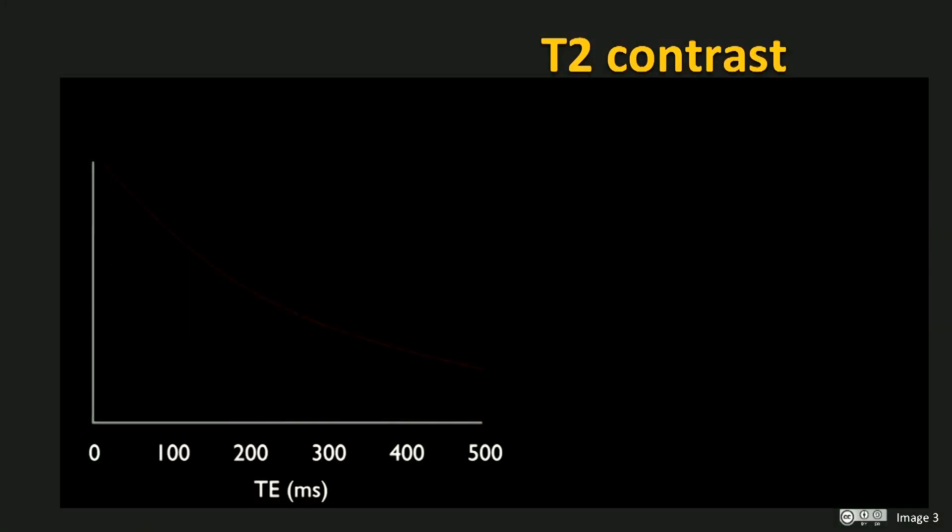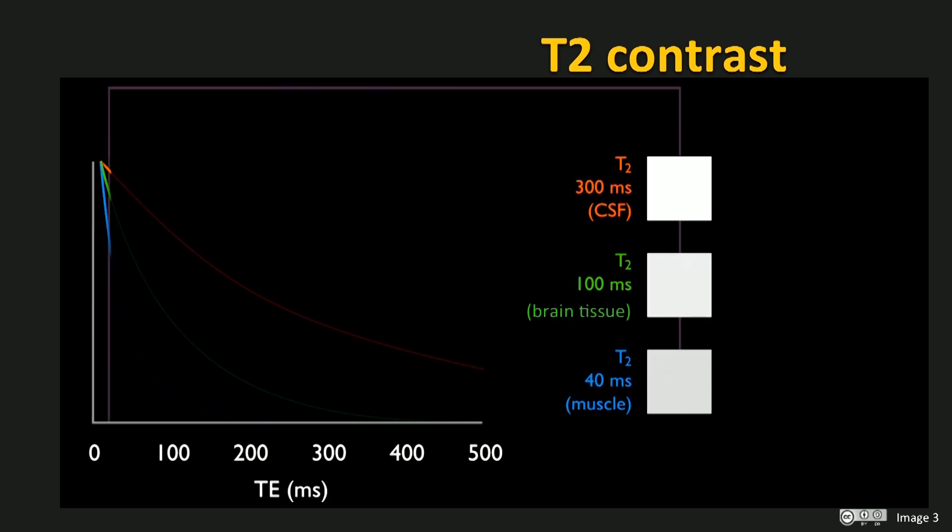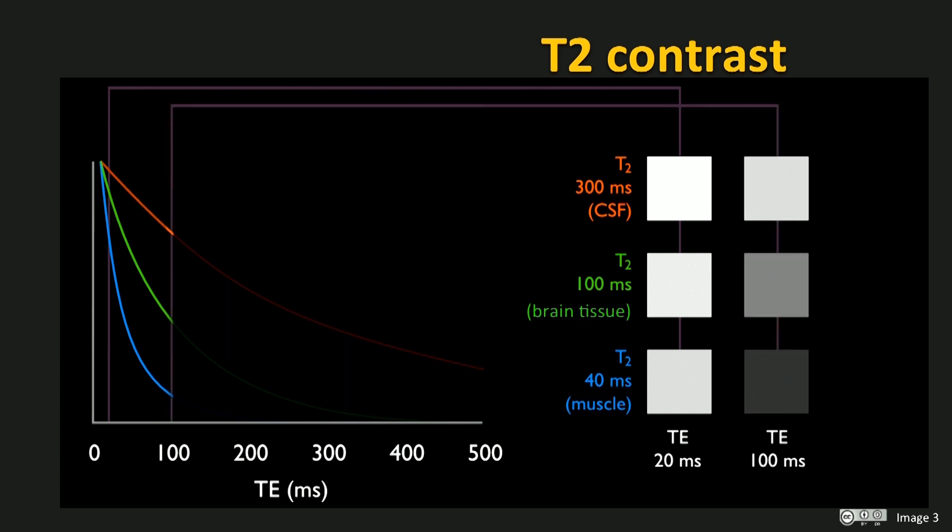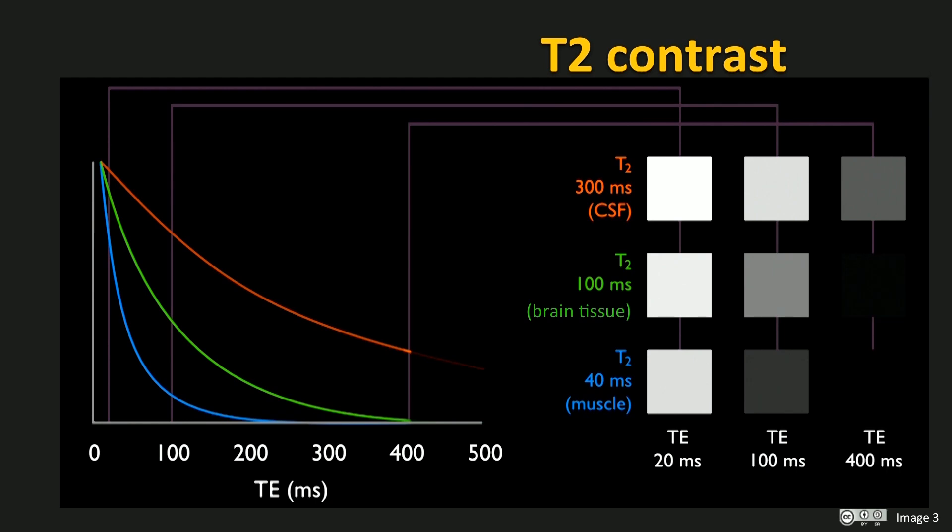So let us look at the effect of the water T2 relaxation time on the signal as a function of TE. Here we look at three tissue types with different T2 values. A long T2 such as in CSF, shown in orange. A medium T2 such as in brain tissue, shown in green. And a short T2 such as in muscle, shown in blue. As the TE time increases, allowing more time for T2 relaxation, the echo magnitude and the image intensity decreases at differing rates for the three tissues.